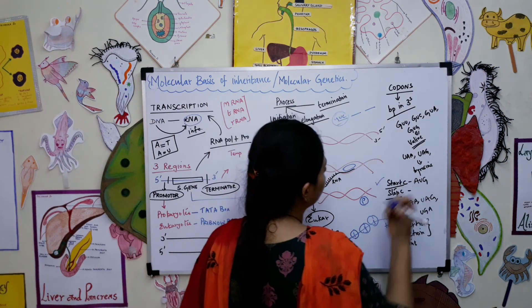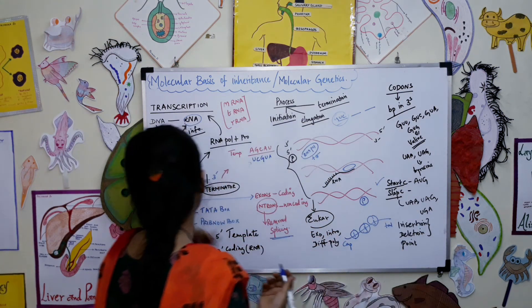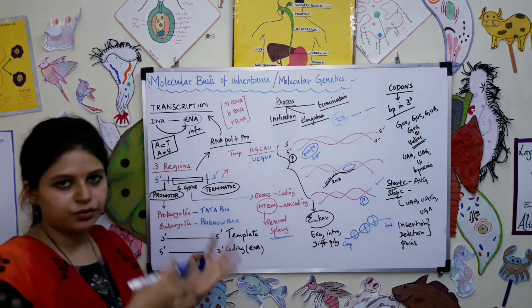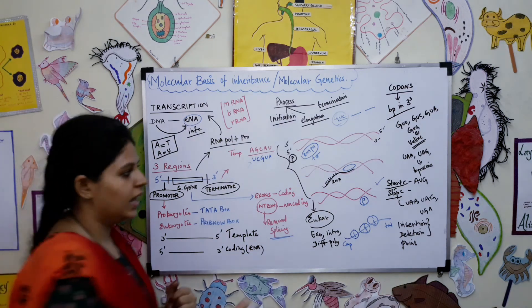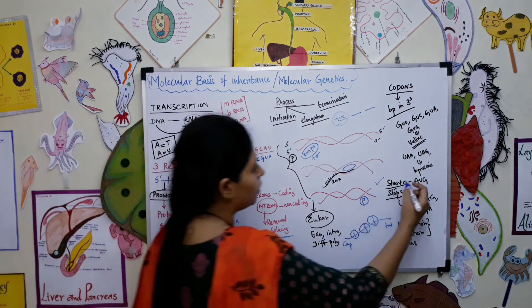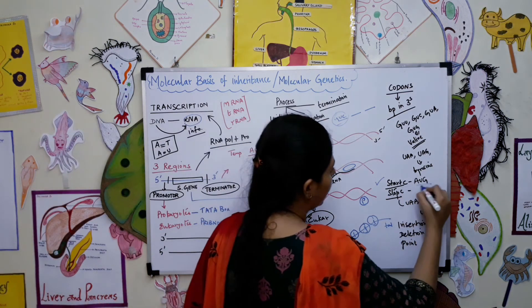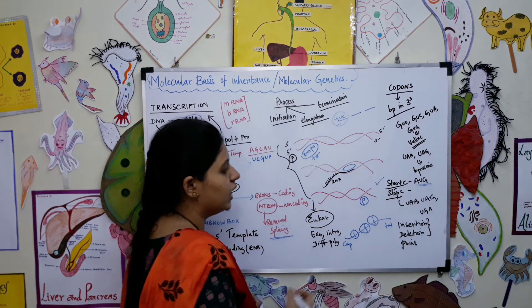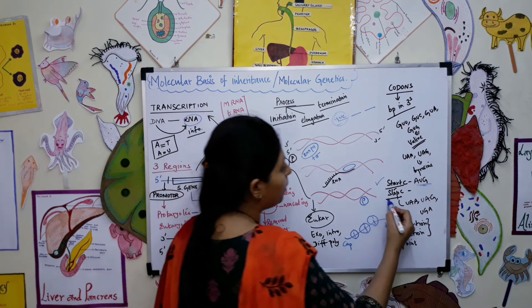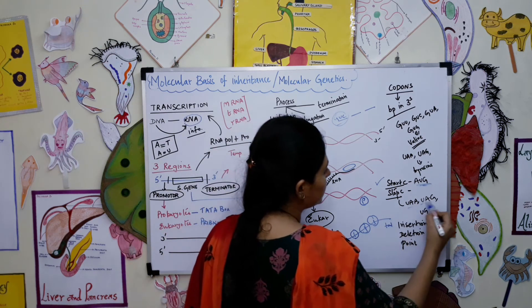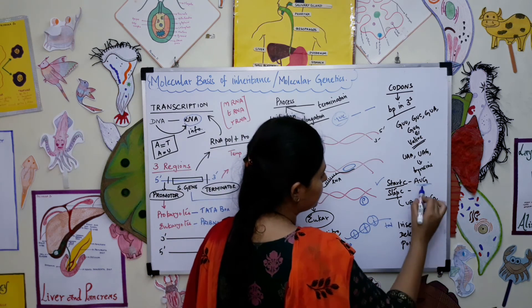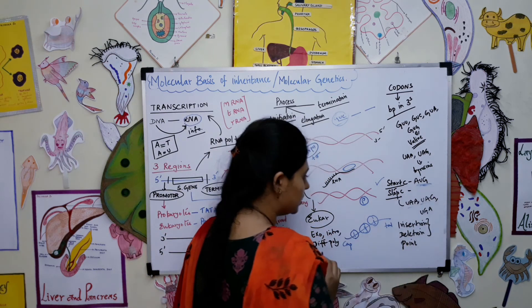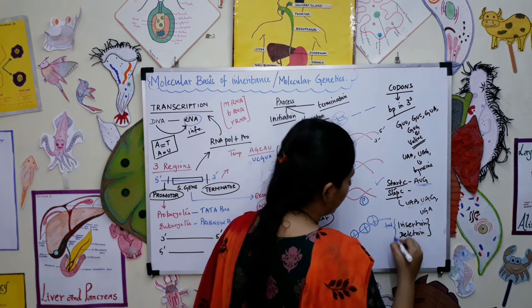There is always a start codon, which is like a promoter from which translation begins. The start codon is AUG. There are three stop codons but only one start codon.